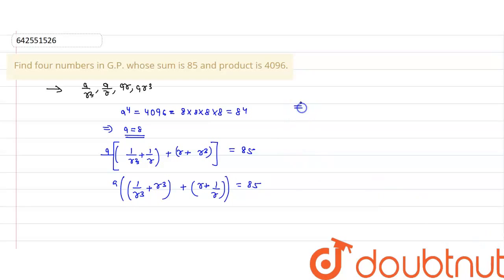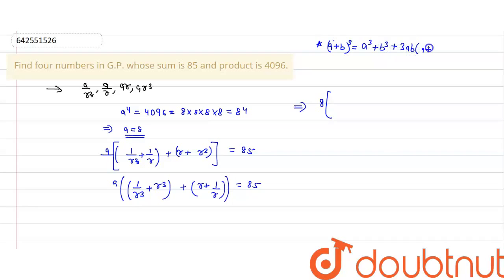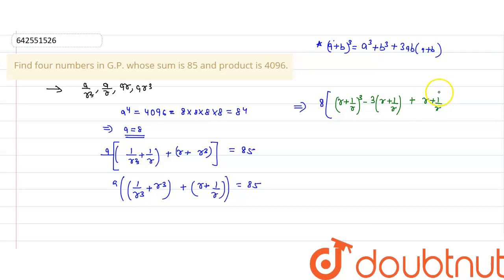Substituting the value of a as 8, we note that r³ + 1/r³ can be written using the identity: (a + b)³ = a³ + b³ + 3ab. So r³ + 1/r³ equals (r + 1/r)³ minus 3(r + 1/r). Putting this in, we get 8 times [(r + 1/r)³ − 3(r + 1/r) + (r + 1/r)] equals 85.